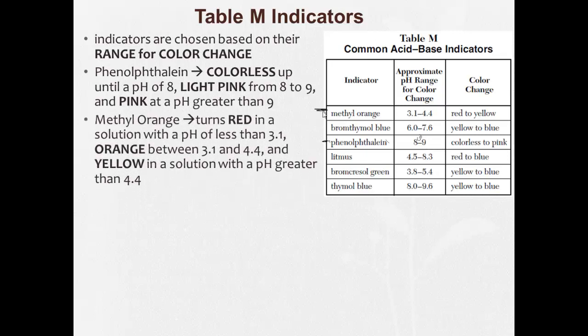Methyl orange turns red in a solution with pH of less than 3.1, so here it's red. It'll turn yellow in a solution greater than 4.4, here it's yellow. And in between it'll be orange.